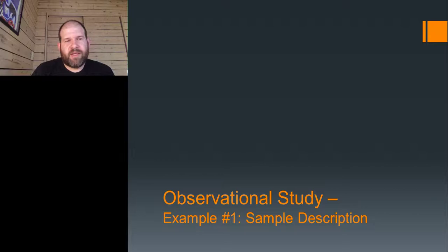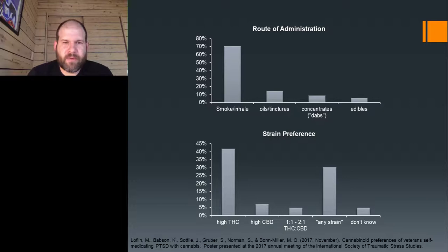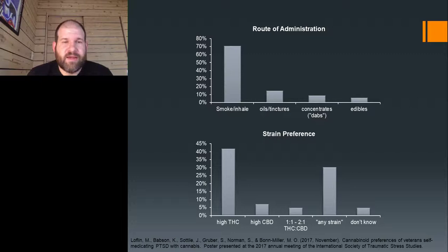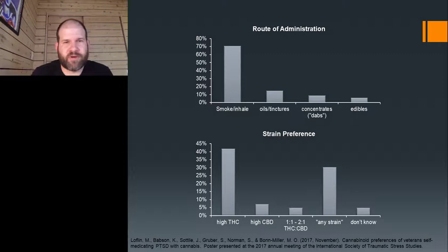On a larger scale, observational studies can do a similar thing — looking at a population or sample and describing what's going on, as a signal for where to go in clinical trials. Here's a study we did looking at veterans with post-traumatic stress disorder, asking how they use cannabis. The majority smoke or inhale. The majority used high THC; very few used high CBD. Surprisingly, a bunch of people said they'd use anything available. From these data, maybe THC is something worth investigating for PTSD. This is one approach to getting a signal of where to go in more rigorous trials.